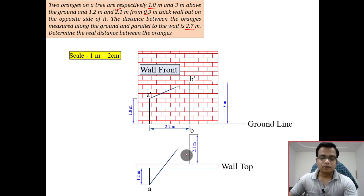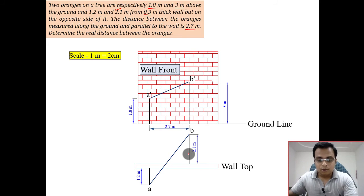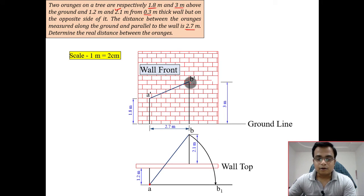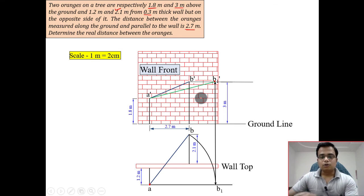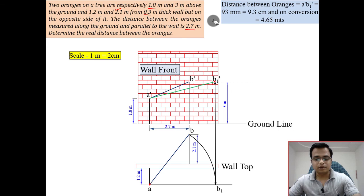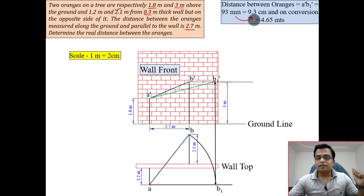Once you have the front and top views, it becomes easy to find the true length. Join the front views and join the top views. I am rotating the top view — fixing point A and rotating point B until line AB becomes absolutely horizontal. This gives the new position of B. Project this upward and draw a horizontal line from the corresponding front view position — this gives B1 dash. Joining B1 dash with A dash gives the true length, which should work out to approximately 93 or 94 millimeters, plus or minus 1 millimeter is acceptable.